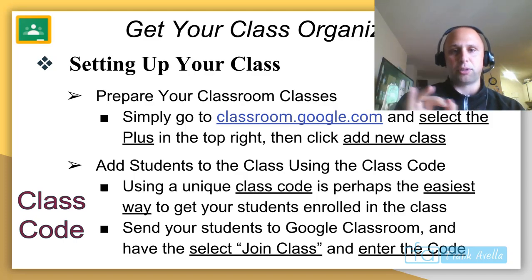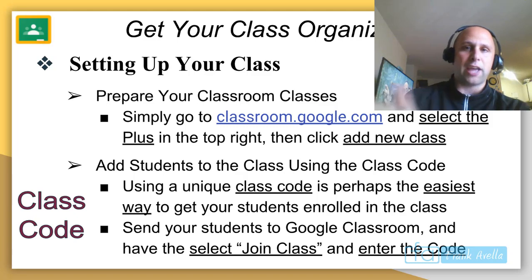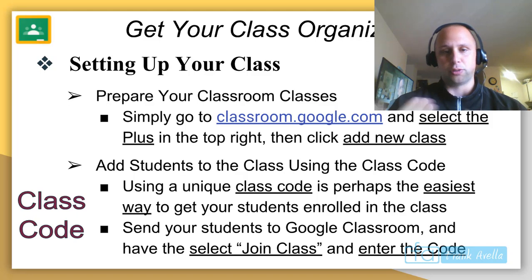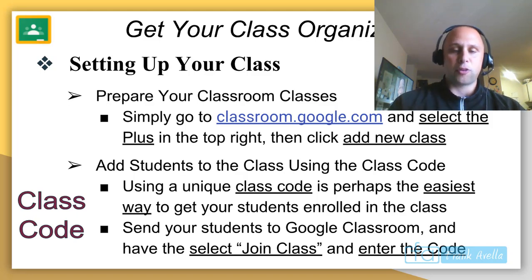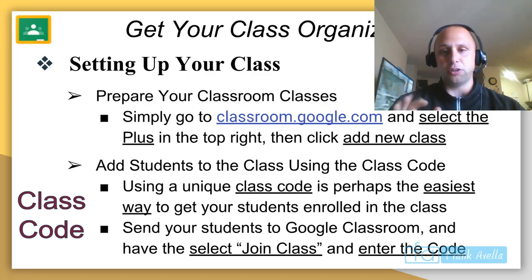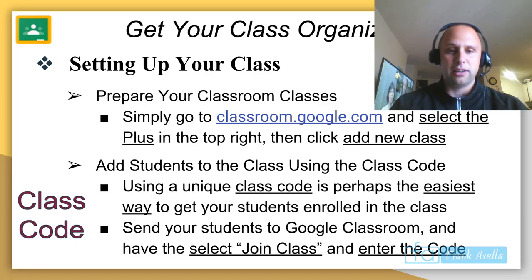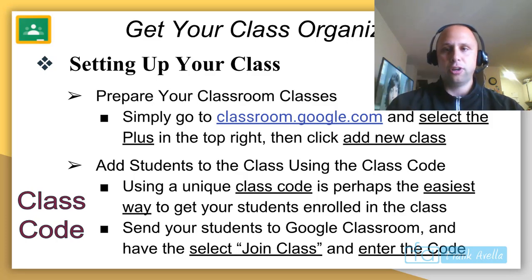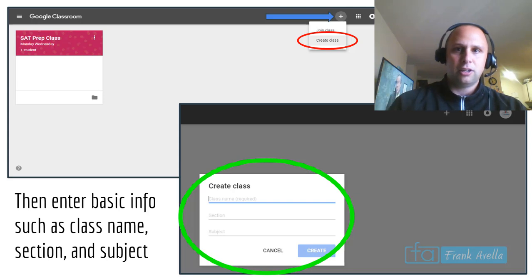To create a classroom, go to classroom.google.com — don't just type in Google Classroom. Select the plus sign in the top right and go to add new class. To add students using the class code, remember the class code is unique to each class. Just send your students to Google Classroom, they click join class, and enter the code.